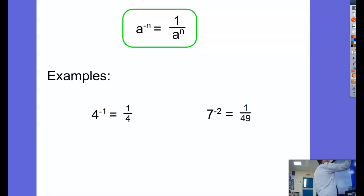Probably easiest to demonstrate this with a couple of examples. So if we have 4 to the power of negative 1, that negative 1 means it's going to be 1 over. It's going to be the reciprocal of 4 to the power of 1. So 1 over 4 to the power of 1, which is 4.